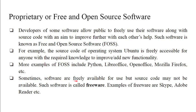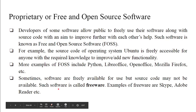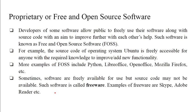Sometimes software is freely available for use but the source code may not be available. We can download such software free of cost, but we cannot access or modify its source code. This type of software is called freeware. Examples of freeware include Skype and Adobe Reader.